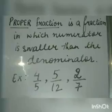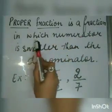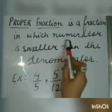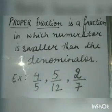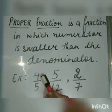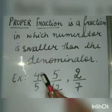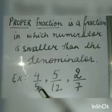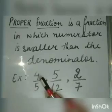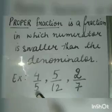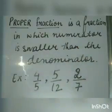Proper fraction. A proper fraction is a fraction in which the numerator is smaller than the denominator. For example, 4 upon 5. The number above the line is known as the numerator and the number below the line is known as the denominator. Here, 4 is smaller than 5, so 4 upon 5 is an example of a proper fraction.